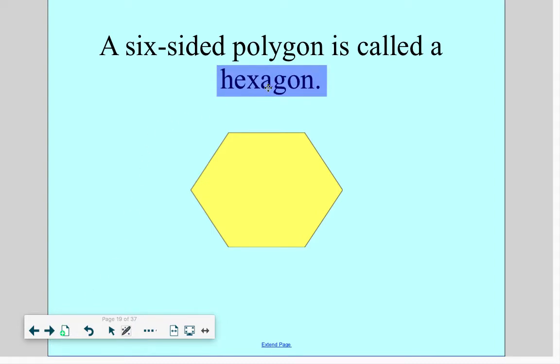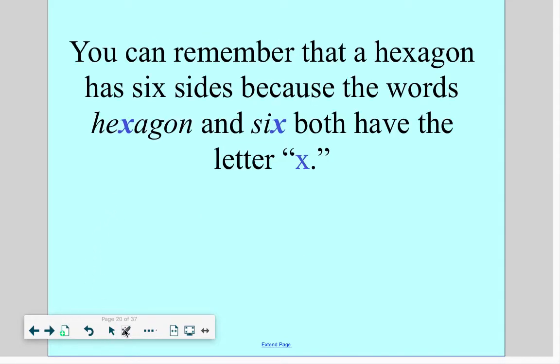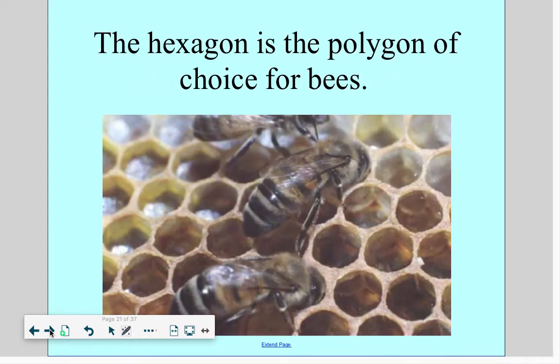Six-sided polygon is called a hexagon. The prefix hexa means six. Now, when you look at the word hexagon, notice it has an X in it. When you look at the word six, it has an X in it. So when you see this X right here, you immediately need to think the X in six. That's a quick way to remember hexagon has six sides. A hexagon has six sides. Now, bees love hexagons because those are the shapes of the little holes in their honeycomb. Hexagons. One, two, three, four, five, six.